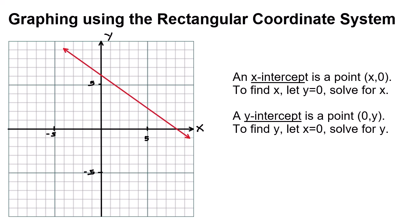This video is about graphing using the rectangular coordinate system, which was invented by René Descartes — the philosopher who gave us the rectangular or Cartesian coordinate system. If I choose this point right here, this is the number 1 on the x-axis and 2 on the y-axis. So this point is (1, 2), and that gives us a way to graph equations.